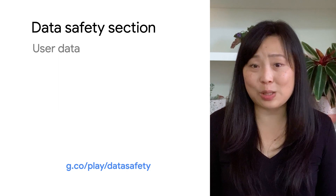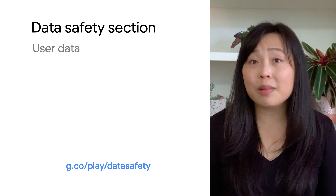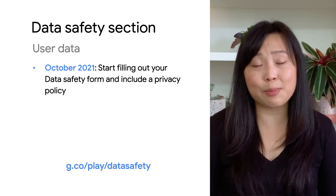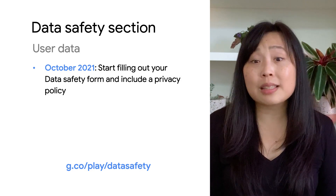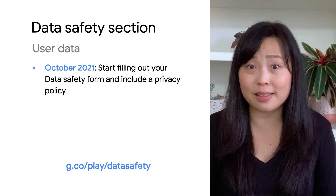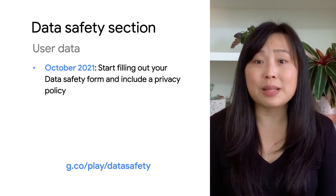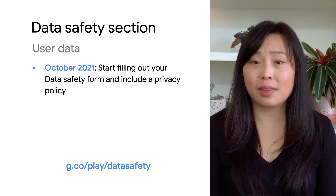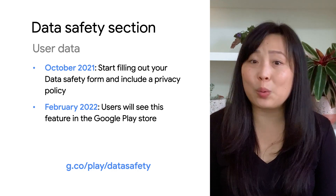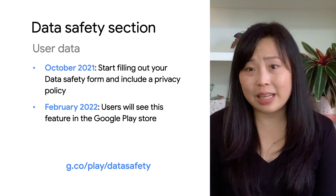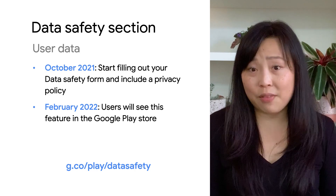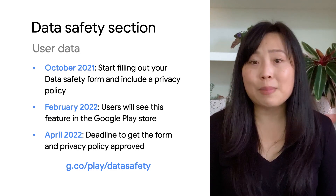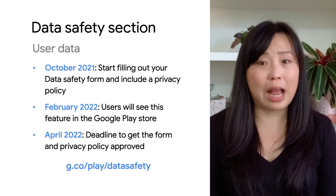As a reminder, the data safety form in Play Console is now available. We want to provide developers with plenty of time and resources to get prepared. In October, you can go to App Content in your Play Console to fill out your information and submit for review feedback. We recommend that you start now because some developers have told us it may take them some time to complete the process. As we shared earlier this year, all developers must include a privacy policy and submit this form, even if your app doesn't collect or share personal and sensitive user data. Next February, users will start to see this feature in your app's Google Play Store listing. If your information isn't approved yet, then it will say no information available. You have until April 2022 before your app must have this section approved, otherwise your new app submission or app updates may be rejected.